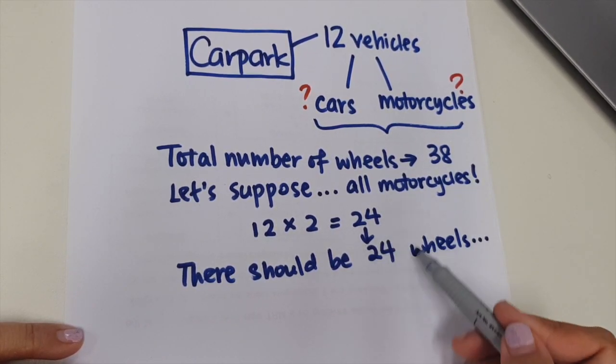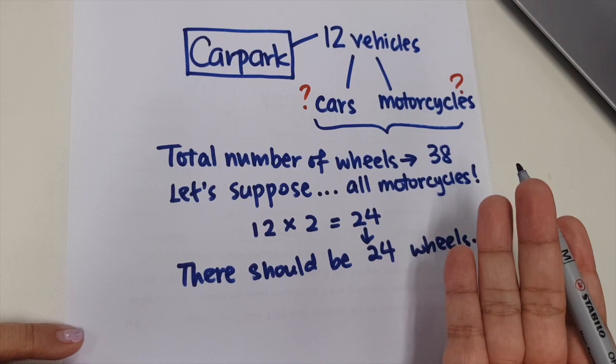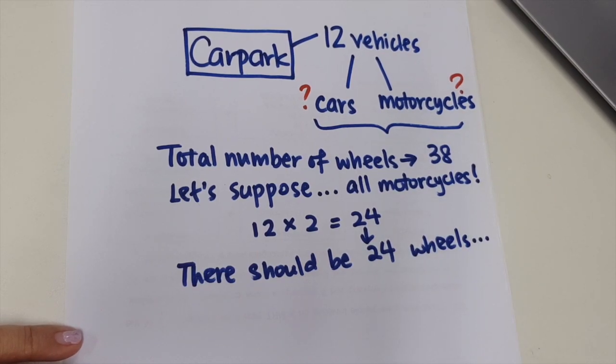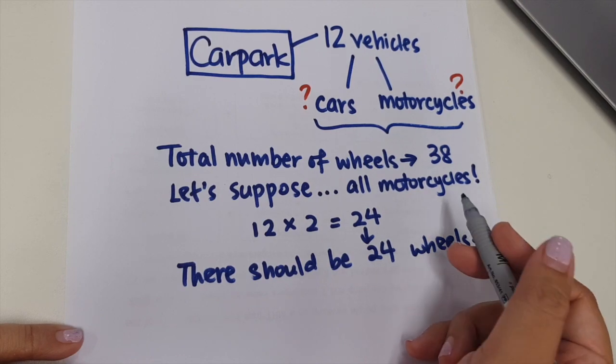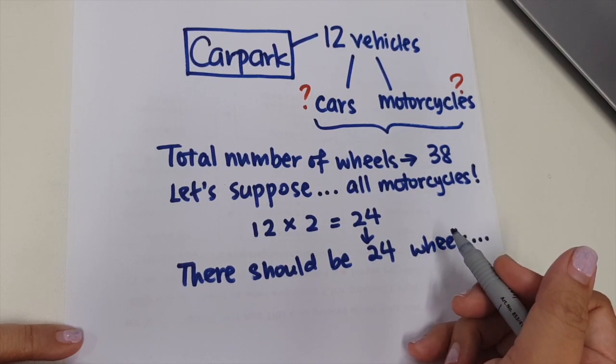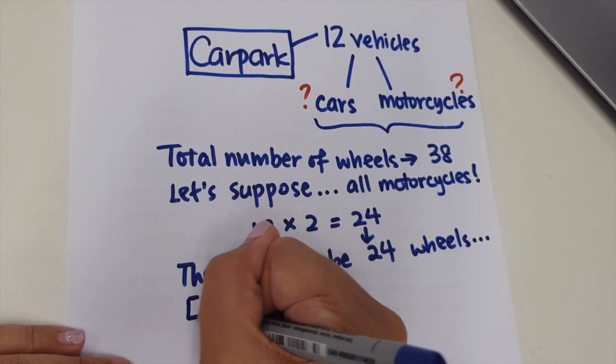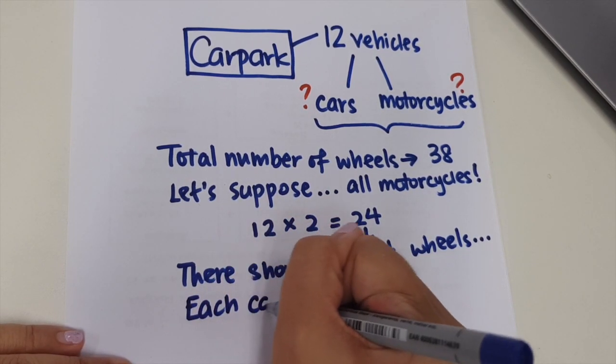However, the total number of wheels is 38. There's a difference now. It's 24 that I found. So why is there a difference? The difference is because of the cars that are among these 12 vehicles. So what do we do next?